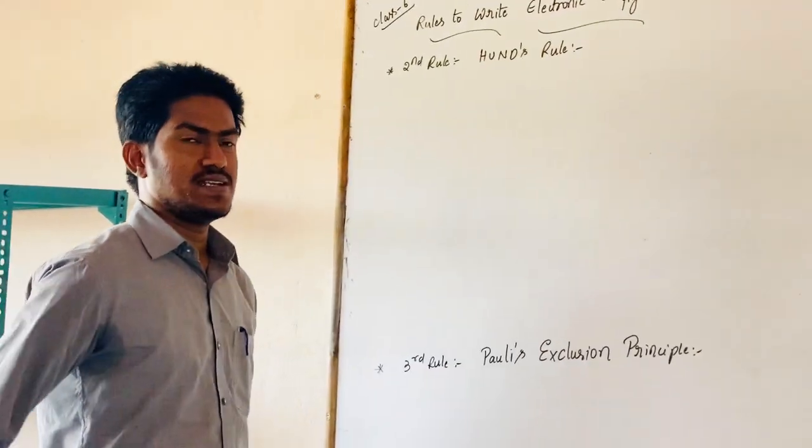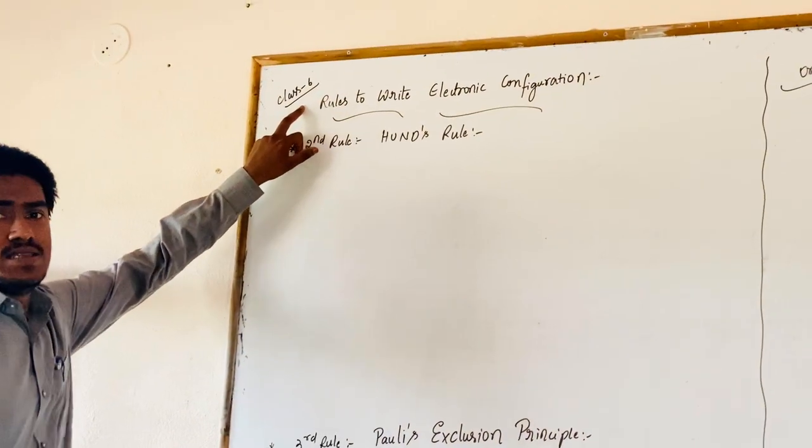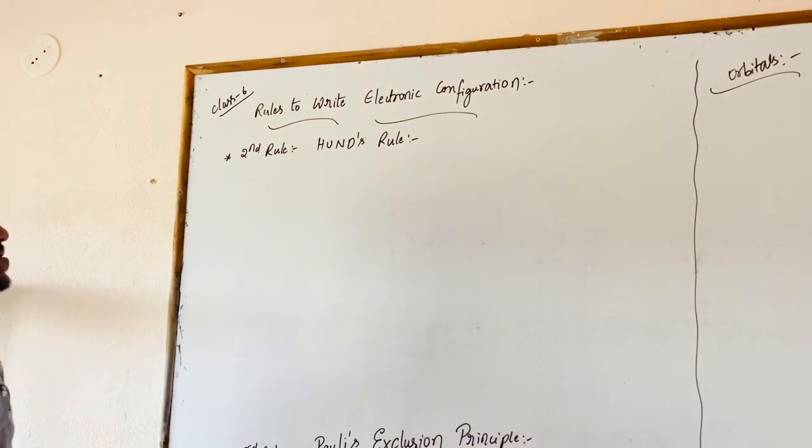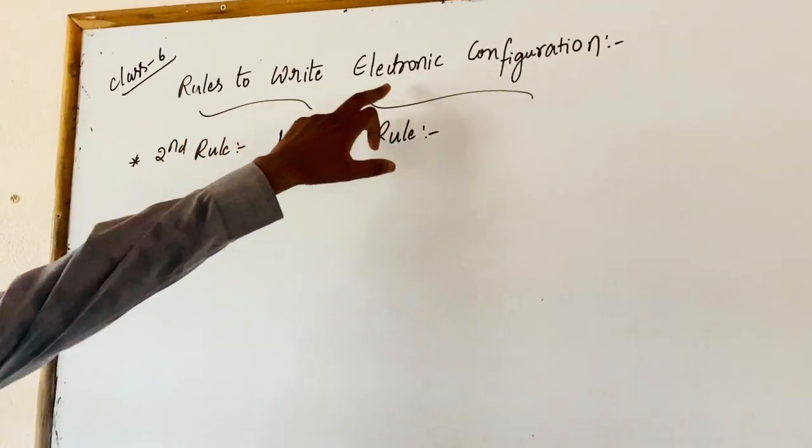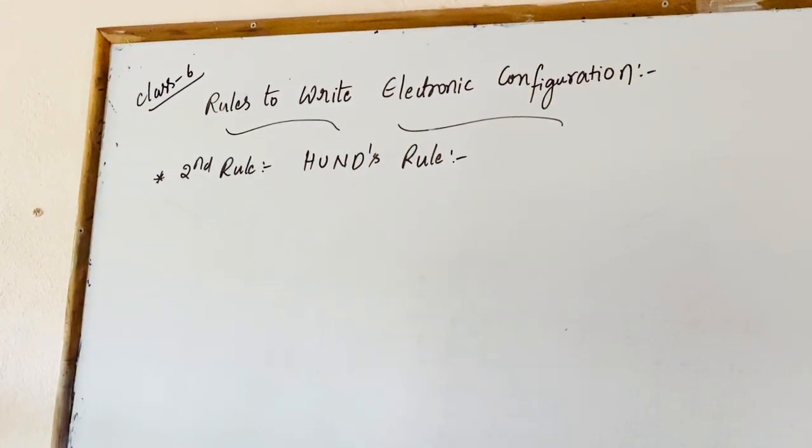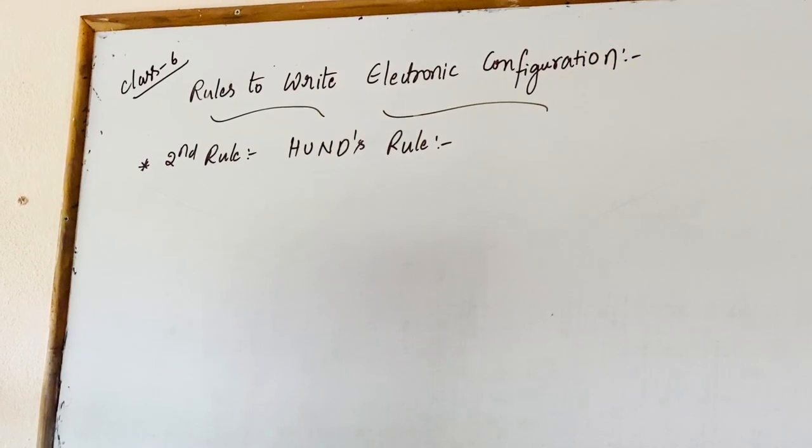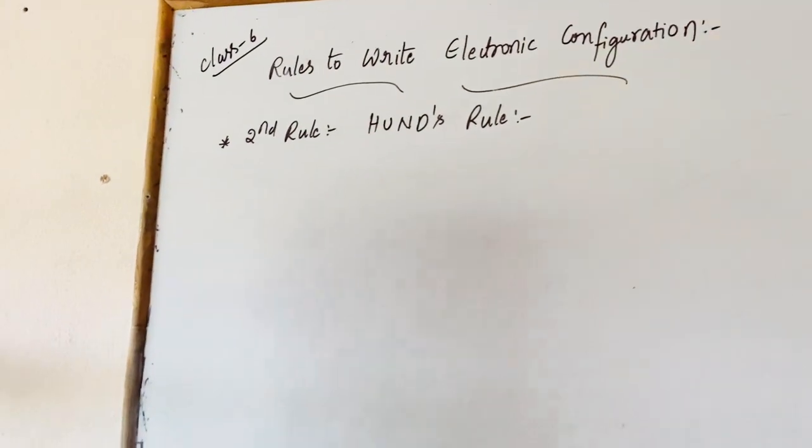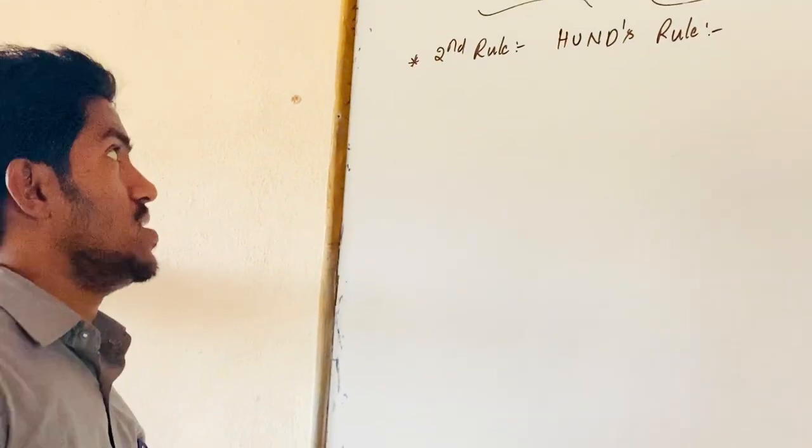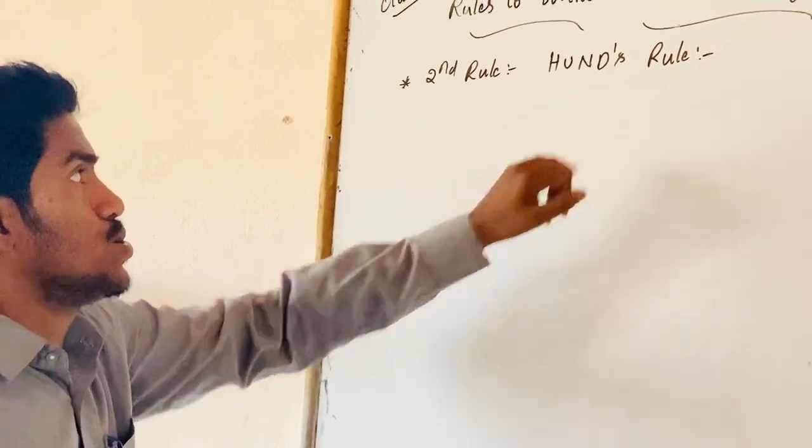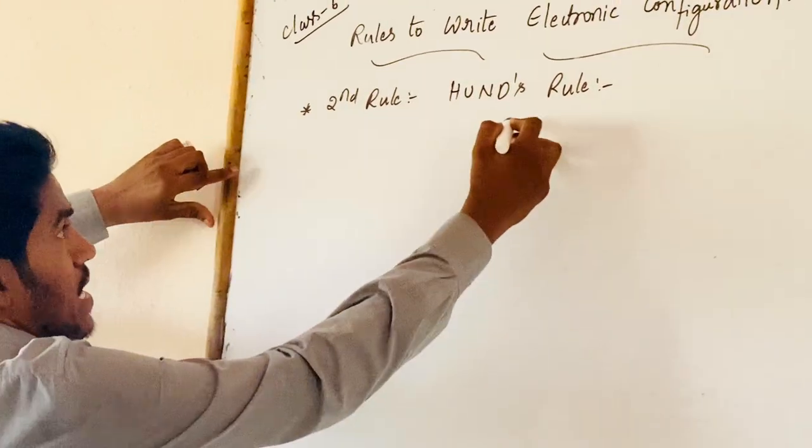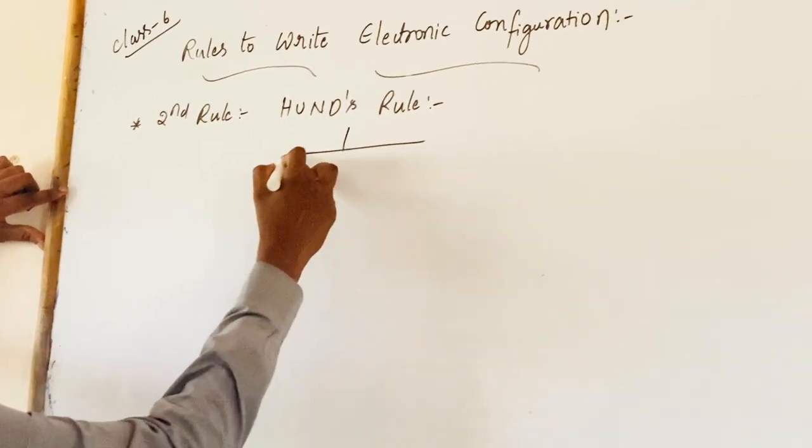Good morning all of you. Today's session is for Class 6. The topic is related to rules to write electronic configuration. In the previous class, the first rule about Aufbau diagram we discussed. Now coming to the second rule, that is Hund's rule. Hund's rule may be classified into two types here.